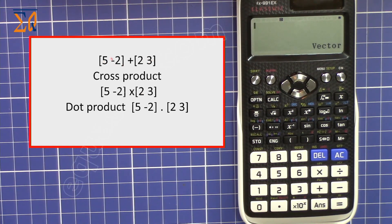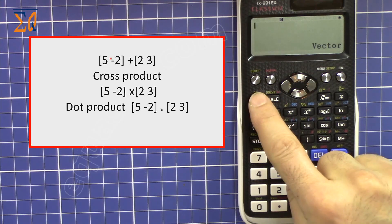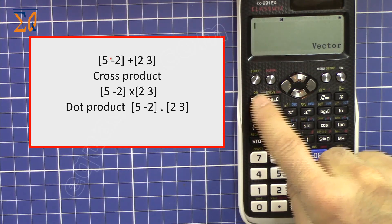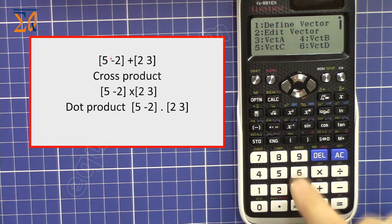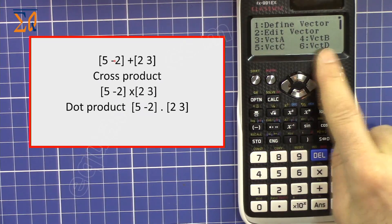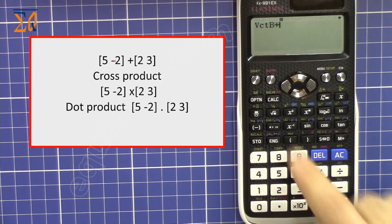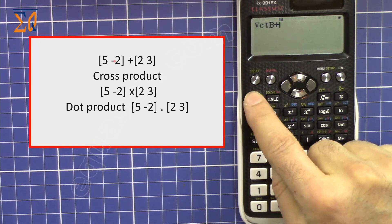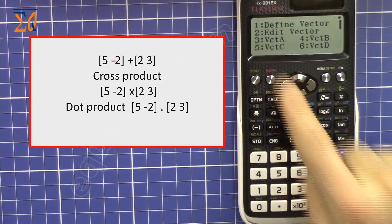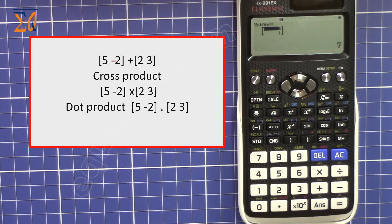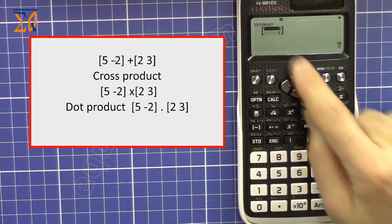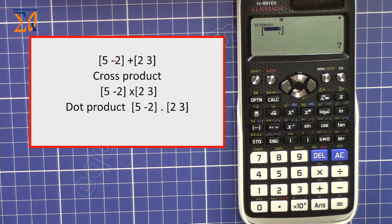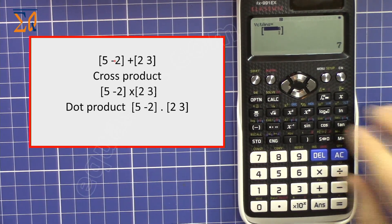Now let's say you want to add vector A and vector B. This was in memory A and this was in B. Press Option and bring vector B — I'm pressing 4 for vector B — then plus sign, Option, vector A which is number 3. The result is 7, 1.